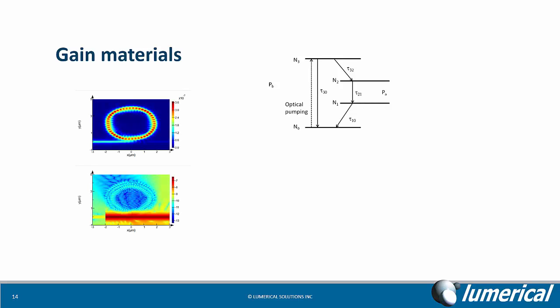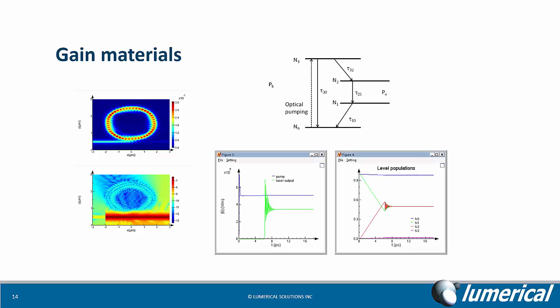We can also handle gain materials, such as this four-level two-electron gain model, and we can use it to look at the dynamics of a microdisk laser, such as the lasing output and the level population throughout the simulation.